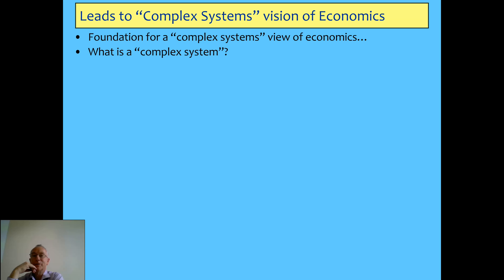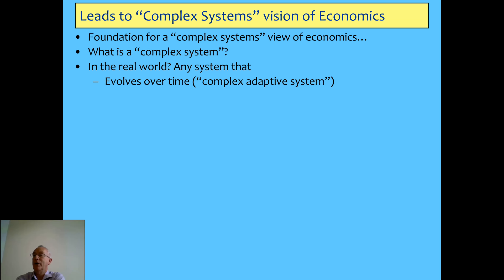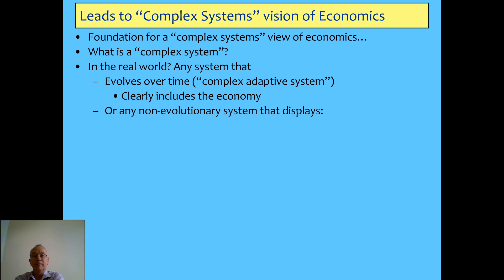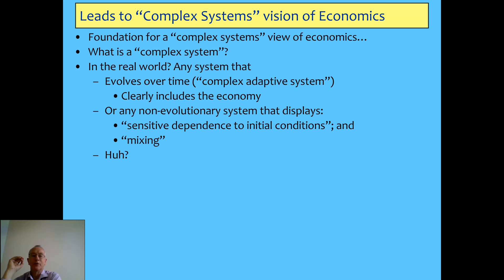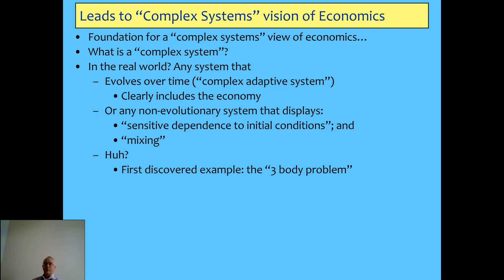Here comes the ninety-nine dollar question which nobody's ever properly answered. I basically see a complex system as any system which evolves over time — that's why it's often called a complex adaptive system. Any non-evolutionary system has sensitive dependence upon initial conditions, which includes the weather. You also have what's called mixing. The basic idea is that all phase spaces, as well as diverging from an initial starting point, return very close to that initial starting point in very complex cycles. The way it was first discovered is what's called the three-body problem.